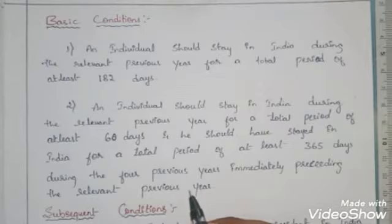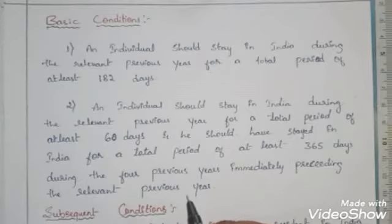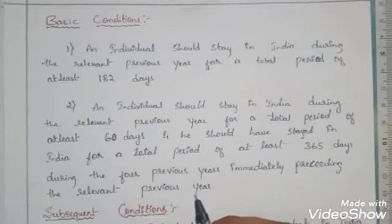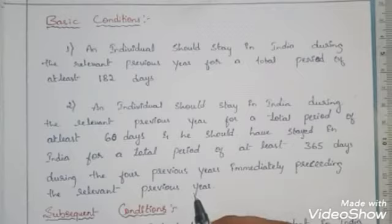Immediately preceding the relevant previous year means: if the previous year is 2018-19, the four relevant preceding years will be 2018, 2017, 2016, and 2015. In those four years combined, he must stay for at least 365 days in the country. These are the two basic conditions for determining the residential status.